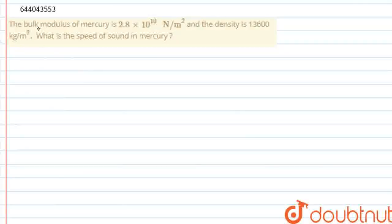This question says that the bulk modulus of mercury is given, which is 2.8 into 10 to power 10 Newton per meter square. And the density of mercury is also given, 13600 kg per meter square.